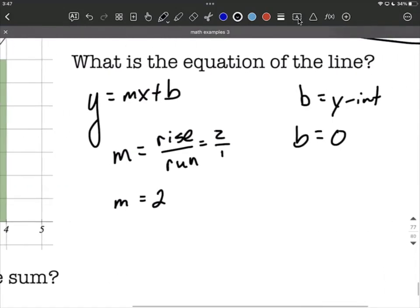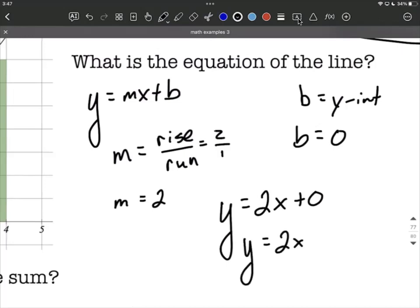Putting these two pieces of information together, the equation is going to be y equals, instead of m, we'll have two, x plus zero, or even more simplified, y equals 2x.